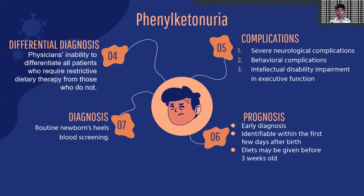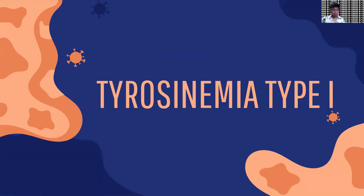The best prognosis is obtained when the disorder is identified within the first few days after birth and a diet is started before three weeks of age. With lifelong treatment, most people with phenylketonuria can live a full life.